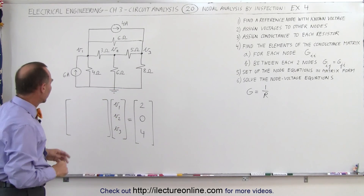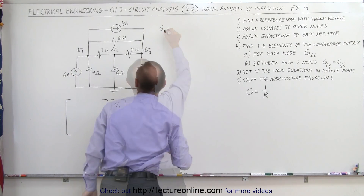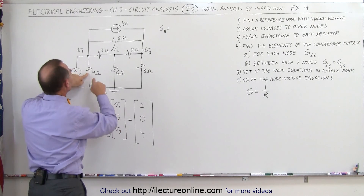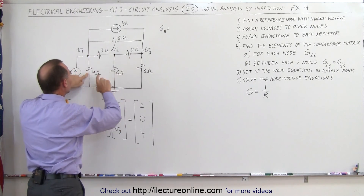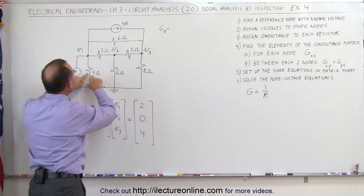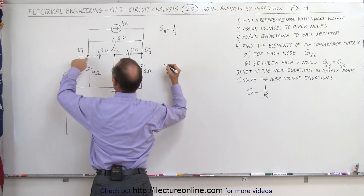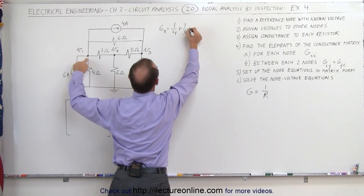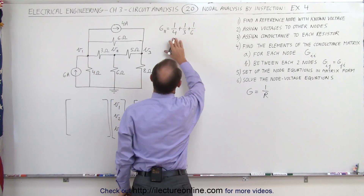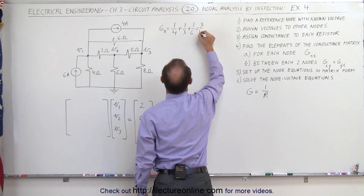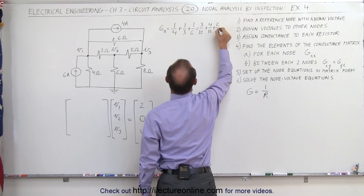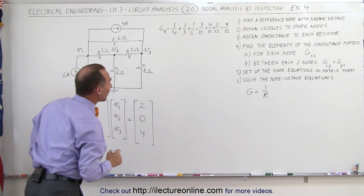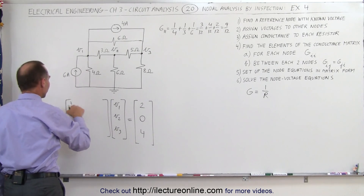Now we need the nine elements that make up the conductance elements. Finding G11, we add up all the conductances connected directly to node one. Remember that conductance is the inverse of resistance. We have one over four, one over three, and this one also directly connected to V1, plus one over six. The common denominator is twelve, so this equals three over twelve plus four over twelve plus two over twelve — that's nine over twelve, which simplifies to three over four. So three over four is G11.